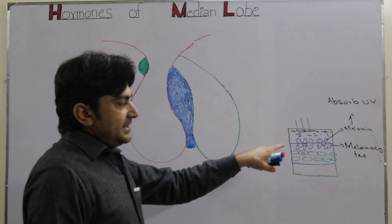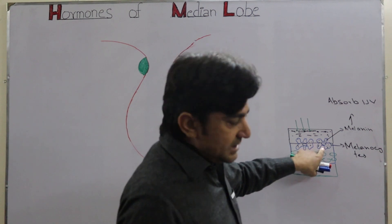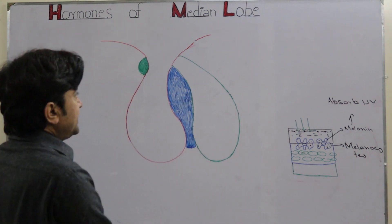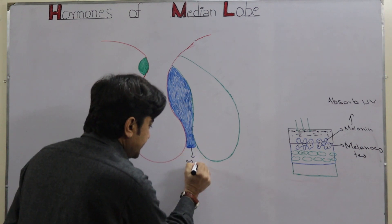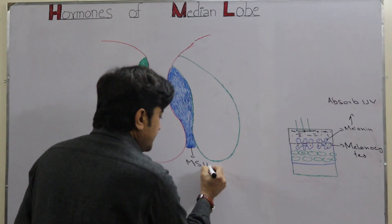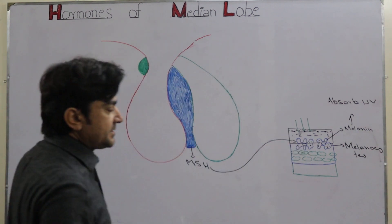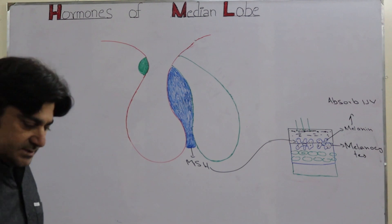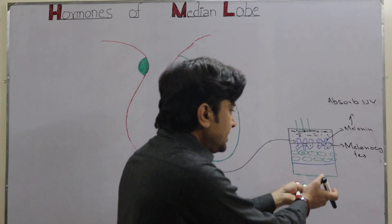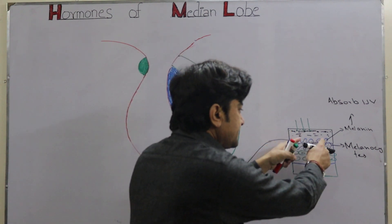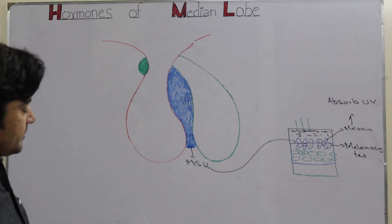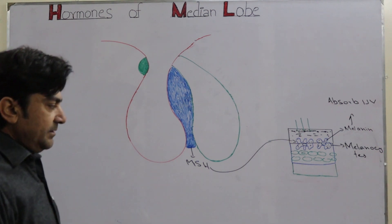Now, what stimulates the synthesis of this melanin pigment? It is mainly a hormone produced by the intermediate lobe called MSH — melanocyte stimulating hormone. When MSH is released by the intermediate lobe, it acts on these melanocyte cells, stimulates those genes involved in melanin pigment synthesis. As a result, melanocytes start to produce more and more melanin pigment, which is then released and scattered in the epidermis, causing the skin to become darker.